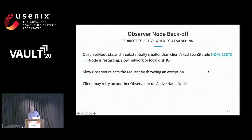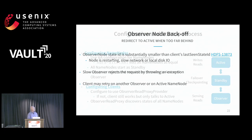There is also a backoff mechanism — bad things happen. The observer can fall behind at startup or if something is wrong with the network or disks. In that case the observer will fail the reads, throw a special exception to the client, and the client will automatically go to the active.